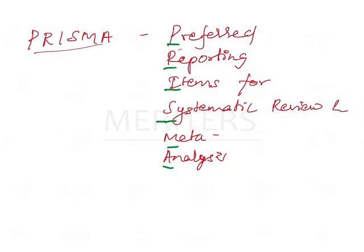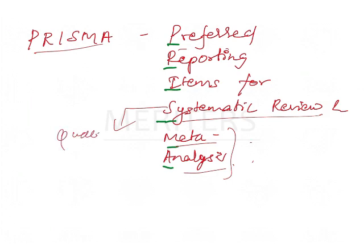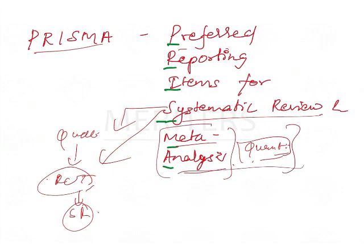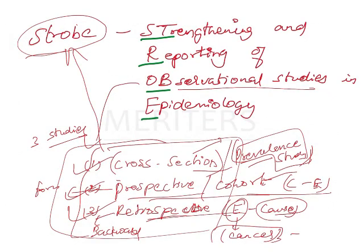Coming to PRISMA — Preferred Reporting Items for Systematic Reviews and Meta-Analysis. Systematic review is qualitative: you collect many RCTs, clinical trials, prospective and retrospective studies and original articles and give one qualitative statement. Meta-analysis is the same thing done quantitatively. Meta-analysis is essentially a systematic review presented in quantitative form. PRISMA applies to both.